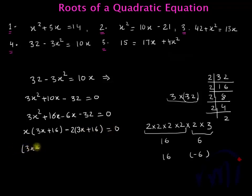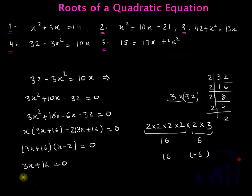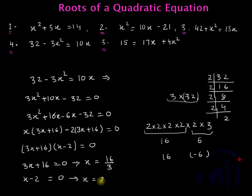Taking 3x plus 16 common leaves x minus 2 in the other bracket, equal to 0. So either 3x plus 16 equals 0 or x minus 2 equals 0. From the first, x equals minus 16 by 3, and from the second, x equals 2. These are the two values of x for this quadratic equation.